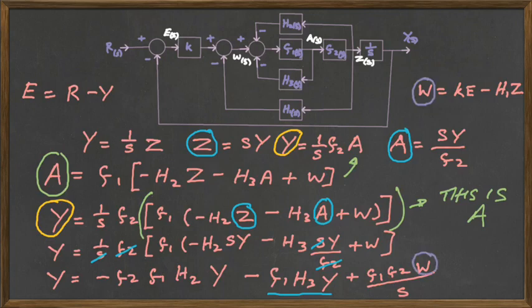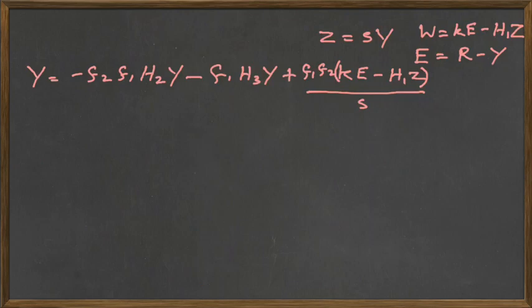And you can look at the formula there and you can realize that the only other thing we have to get rid of is W. So, we're going to substitute the KE minus H1Z in place of the W. Okay, so what you're seeing now is we have done that and we have brought back the E and the Z onto this page. Why? Because after we substitute for the W, what is left in the brackets, we still have the E and the Z to get rid of.